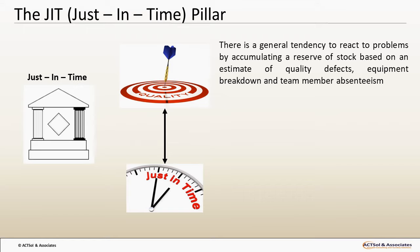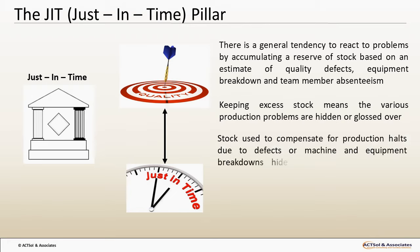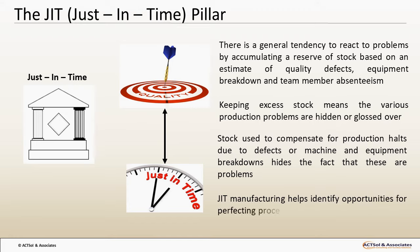In JIT, there is no using stock build-up to counter these problems. Keeping excess stock means the various production problems are hidden or glossed over. This makes it impossible to establish a work site with a strong constitution. Stock used to compensate for production halts due to defects or machine breakdowns hides the fact that these are problems, and hides the need to forestall problems, prevent their recurrence or improve the operational rate. JIT manufacturing helps identify opportunities for perfecting processes rather than creating space for inventories.